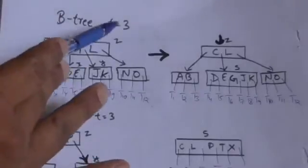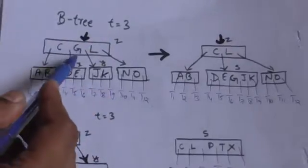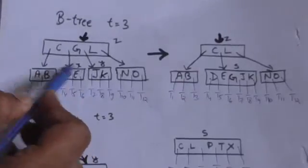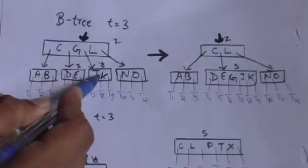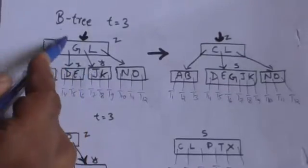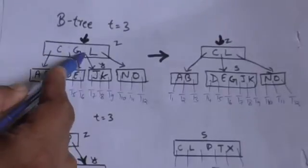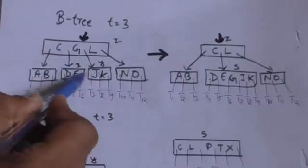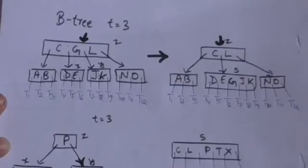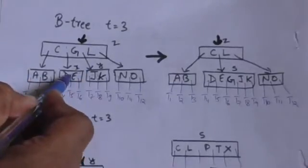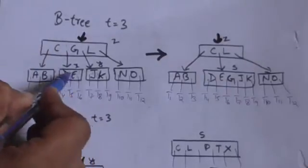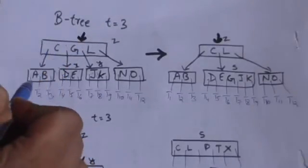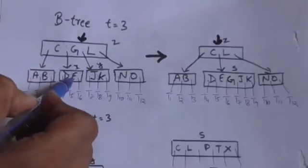Now suppose there is a B-tree with minimum degree 3. We have to merge two nodes x and y of that B-tree. Both of them have the minimum number of keys — that is, two keys each. Their parent node z has more than two keys; it has 3 keys: C, G, and L. Node x is at the left of key G of parent node z.